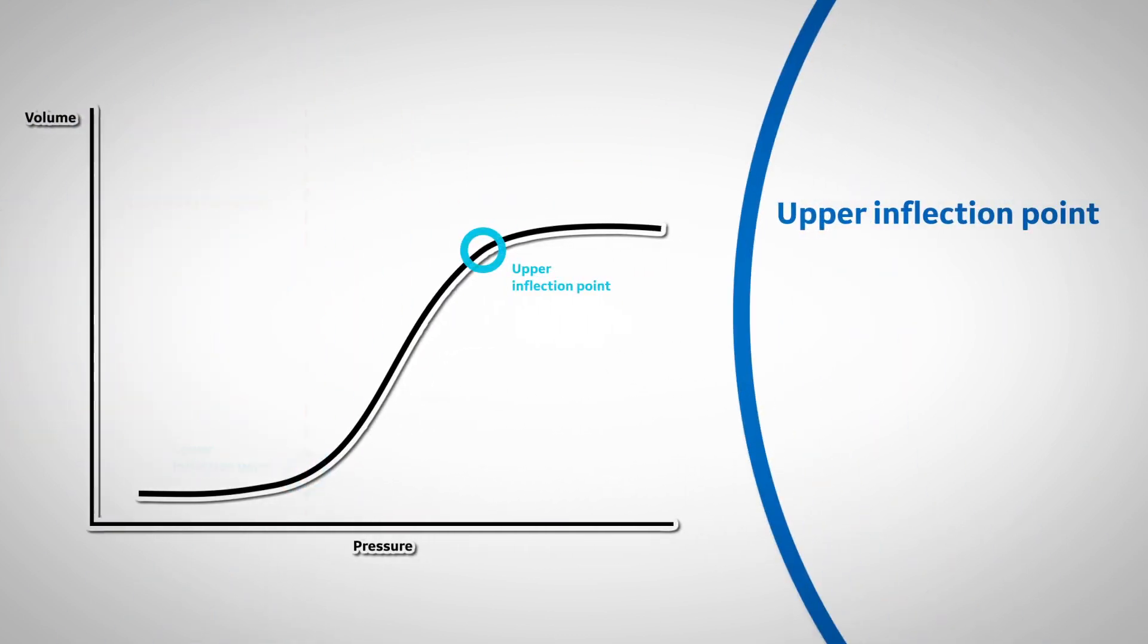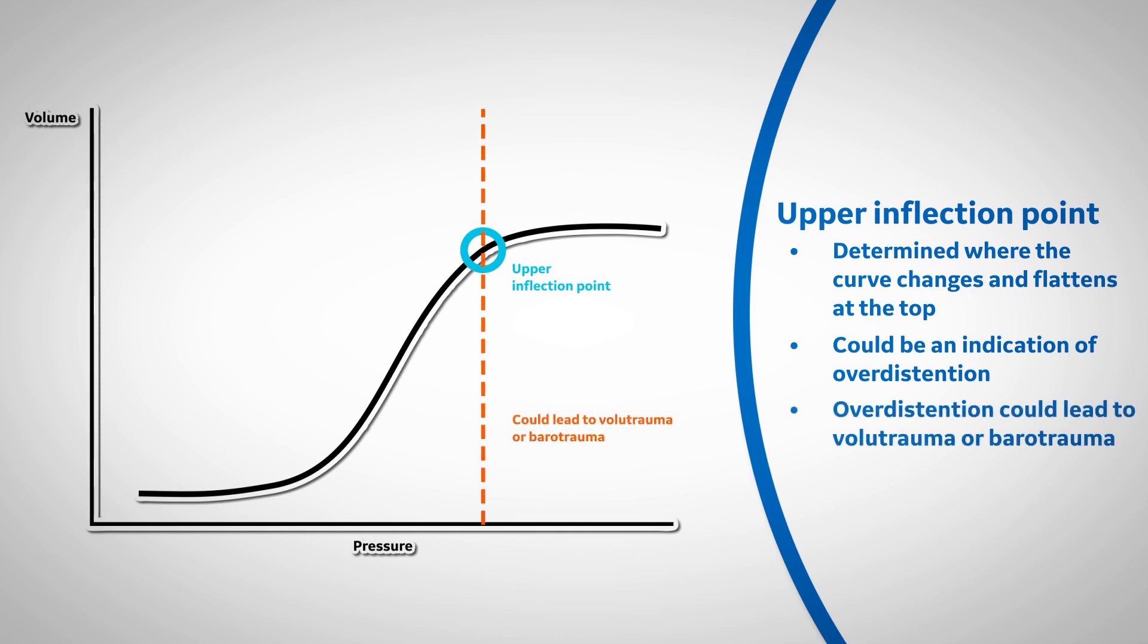The upper inflection point is determined where the curve changes and flattens at the top. This could be an indication of over-distention or the maximum setting for peak airway pressure. If over-distention occurs over an extended period of time, it could lead to volutrauma or barotrauma.